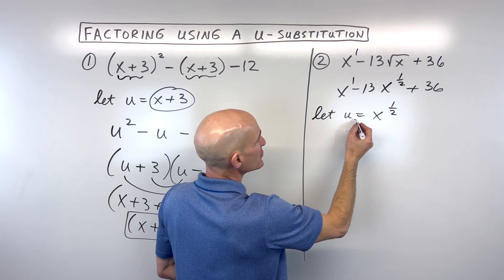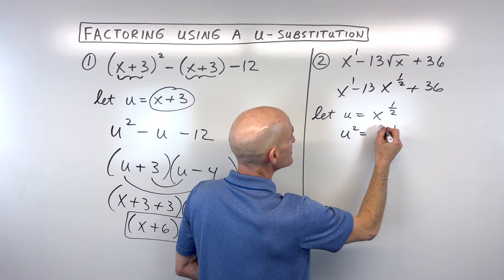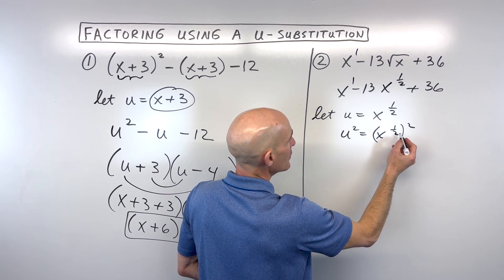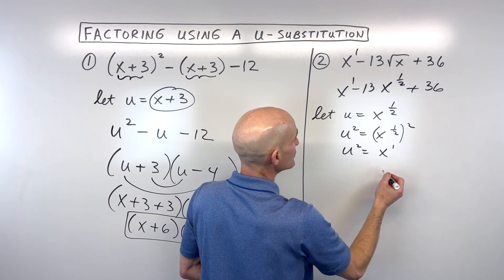So we're going to do a u-substitution, and we're going to let u equal this middle term here, like this x to the one-half. So we're going to say let u equal x to the one-half. And think about squaring both sides. If I square both sides, u squared is going to equal x to the one-half squared, which one-half times two is just one. So u squared is equal to x to the first.